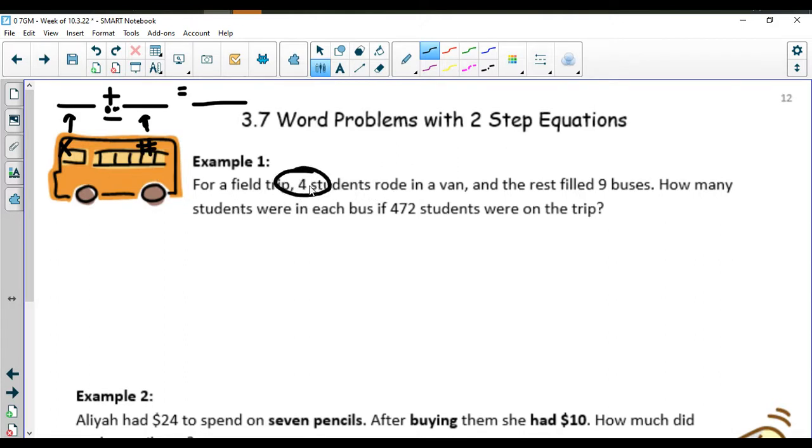They are part of our group but they're not riding in a bus and we know that in the van there's only four of them. The rest of the students filled up nine buses but how many students went on each bus? We don't really know, so we're going to put the X with the number nine because nine buses times X students on there.